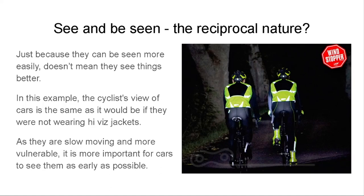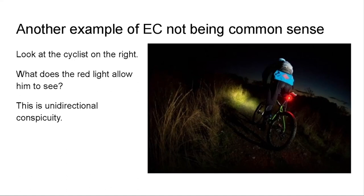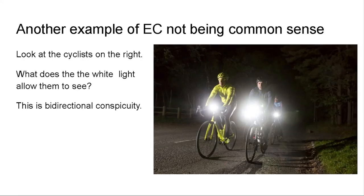We're trying to look at the whole reciprocal thing. If you look at this guy, what does the red light help him see? Nothing — I would see him because he's got the red light on at the back of the bike. He will see things because he's got an ultra bright yellow light on his bike. With cyclists carrying white lights, they can see where they're going and we can see them — this is bi-directional conspicuity and it's the best sort of conspicuity.